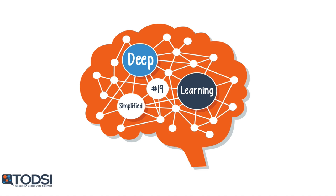If you want a high-quality deep learning library with plenty of great extensions and the support of a large community, then you should take a look at Torch. Torch offers GPU support, the option to set up a deep net by configuring its hyperparameters, and many other useful features. Let's check it out.